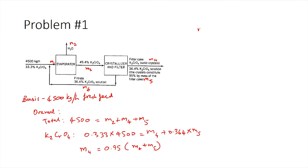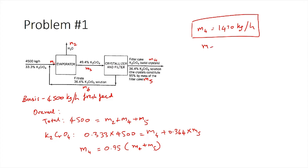Solving these equations, M4 = 1470 kilograms per hour — the rate of production of potassium chromate crystals. M5 = 77.5 kilograms per hour — the liquid accompanying the filter cake. Using the total mass balance, M2 = 4500 − 1470 − 77.5 ≈ 2950 kilograms per hour, which is the rate of evaporation.